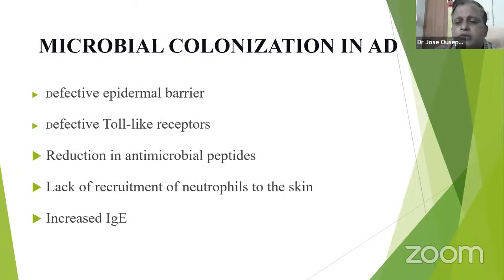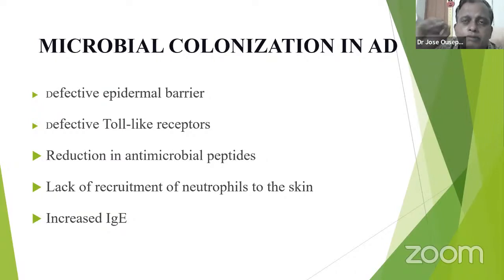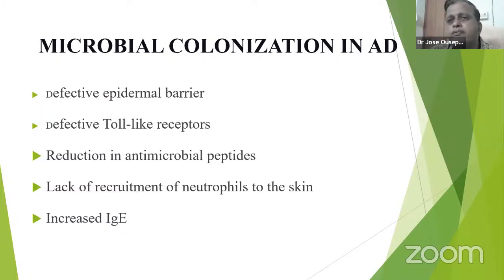Bacterial colonization is an important factor in Atopic Dermatitis. Due to epidermal barrier dysfunction and defective TLR function, there is decreased antimicrobial peptide production, leading to more bacterial colonization. Decreased skin barrier function, increased IgE levels, and multiple other factors all contribute to the increased chance of infection in a child with Atopic Dermatitis.